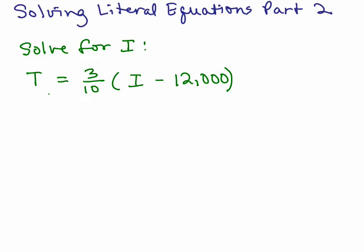So this is a tax formula, T equals 3 tenths I minus 12,000. We're going to solve for I. So first you notice there's only I in one place and it happens to be in the parentheses. So there are two ways you can go about doing this.